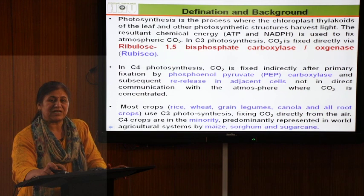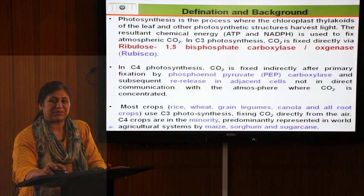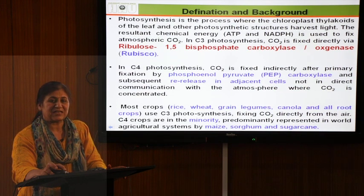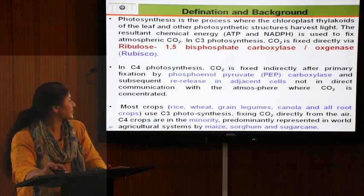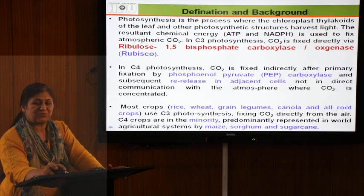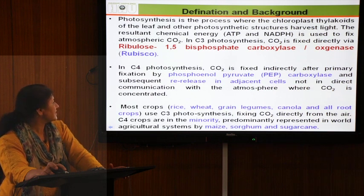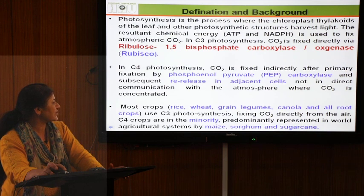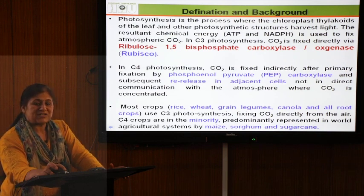With the help of ATP and NADPH, the CO2 present in the air is fixed. There are two major types of plants: C3 plants and C4 plants. In C3 photosynthesis, CO2 is fixed directly via the major enzyme of photosynthesis called rubisco.